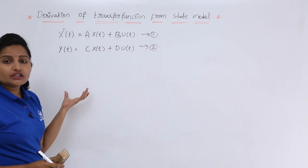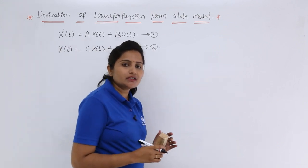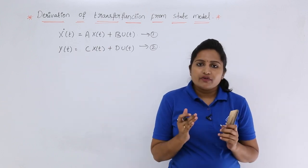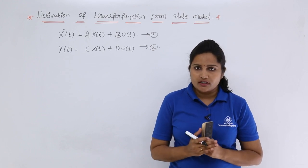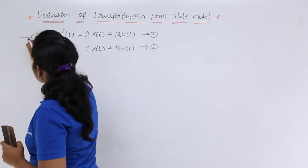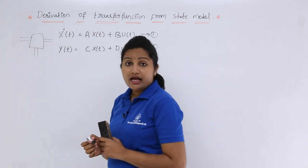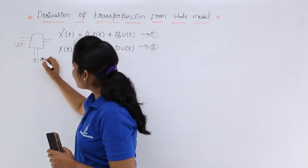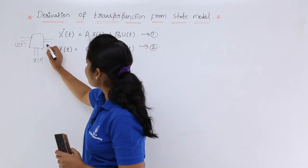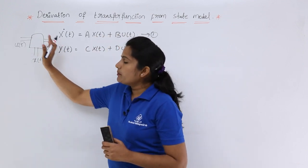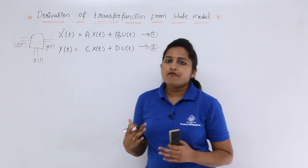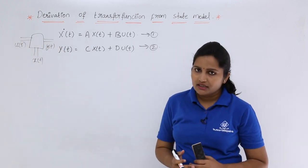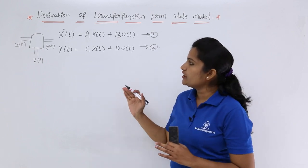The output equation is y(t) = C·x(t) + D·u(t). These two equations together form the state model. From this state model, we need to derive the transfer function. The transfer function is nothing but output transform divided by input transform, that is Y(s)/U(s). This comes from the multi-input multi-output system framework with inputs u(t), state variables x(t), and output y(t).